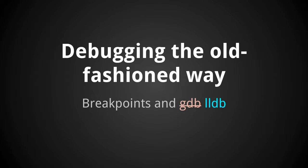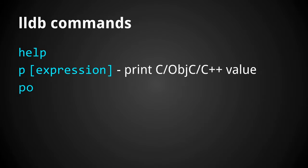First I'm going to talk about debugging the fashionable way — with standard IDE tools, available for decades. You can set breakpoints in Xcode and use GDB, which is now LLDB. The 'LL' is a reference to LLVM, the compiler infrastructure. Here are some basic commands: help, P, and PO. P and PO basically do the same thing these days; there's no real point in distinguishing them. They're useful when you've stopped the debugger and want to print out the value of some variable.